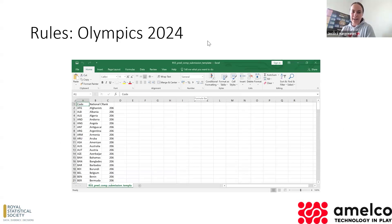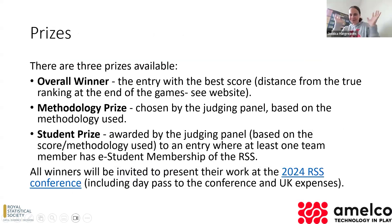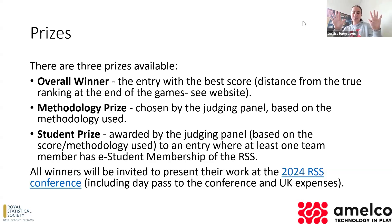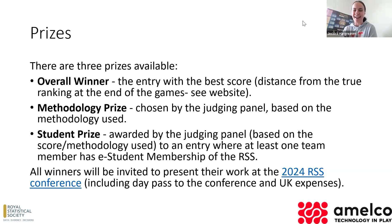We've got three prizes available. The overall winner is the person with the best score — basically the distance from the true ranking at the end of the games. We're going to look at your correlation between what you thought and what the final medals table is, and the person with the highest correlation or the lowest distance is the winner. There's a really nice description about the mathematics underpinning our scoring metric on the website.